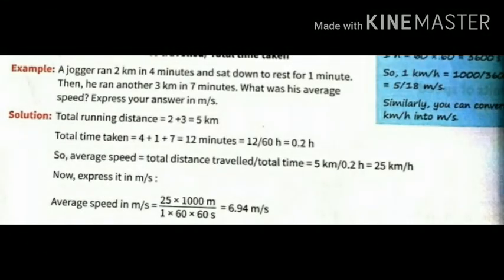See here one numerical is given. A jogger runs 2 km in 4 minutes and sits down to rest for 1 minute. Then he ran again and covered 3 km in 7 minutes. You have to find out the average speed and express it in meter per second. So you will take total distance: 2 plus 3 equals 5 km. Total time is 4 minutes, then 1 minute of rest, and then again 7 minutes, equals 12 minutes.